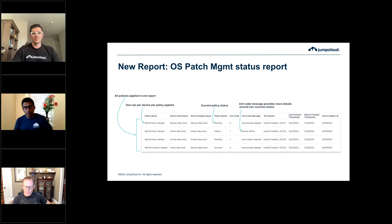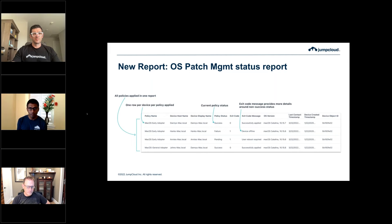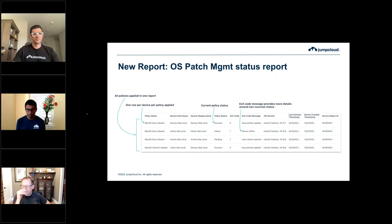Looking at what the new reports actually look like — the OS patch management status report shows the policy name, device hostname, display name for the host, and most importantly the policy status — whether it was successfully executed or not. In the case of a failed execution, we give you an exit code message explaining why the policy failed, such as a device being offline or a patch that's waiting for a user reboot. You now have a single report giving you OS patch management status across your fleet.